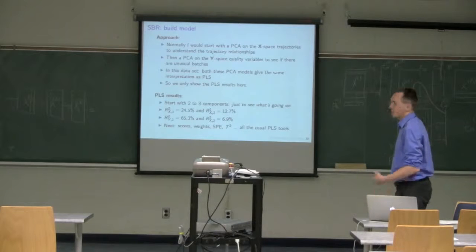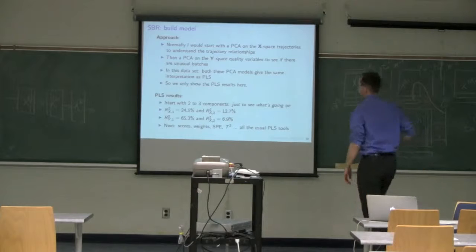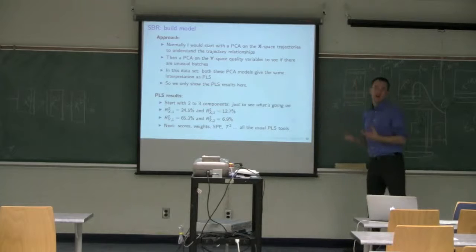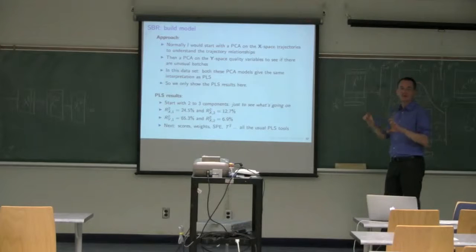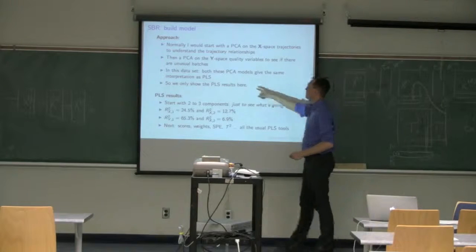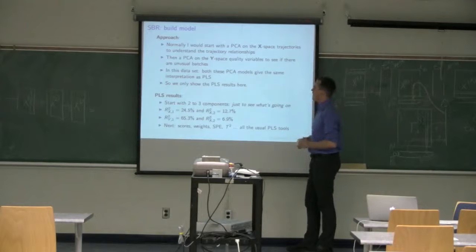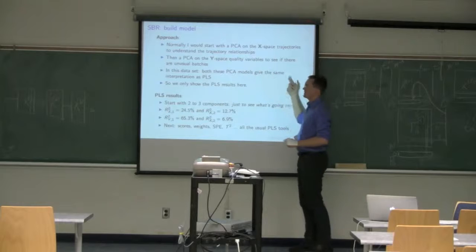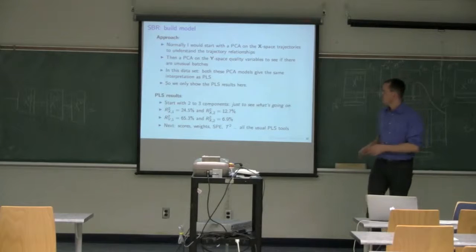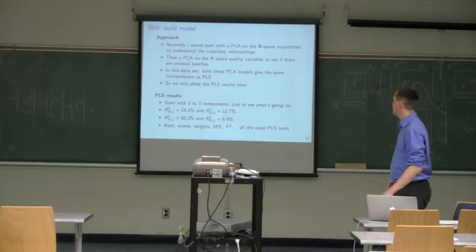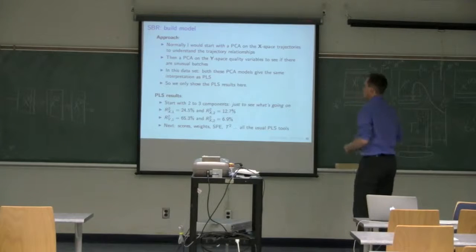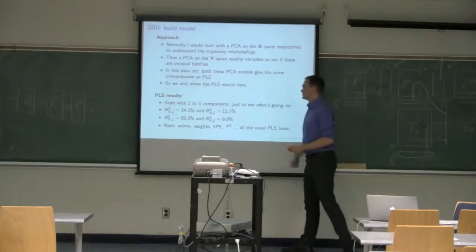Normally I would start a data analysis of this type by doing a PCA on the X-space trajectories, follow that up with a PCA on the Y-space, and then do a batch PLS model, where we have our batch trajectories unfolded in a very long matrix in X, and a Y-space on the other five columns from the lab. In this case, both PCA models on the X-space and Y-space give the same interpretation as PLS, so I'm going to jump straight to the PLS and show some results.